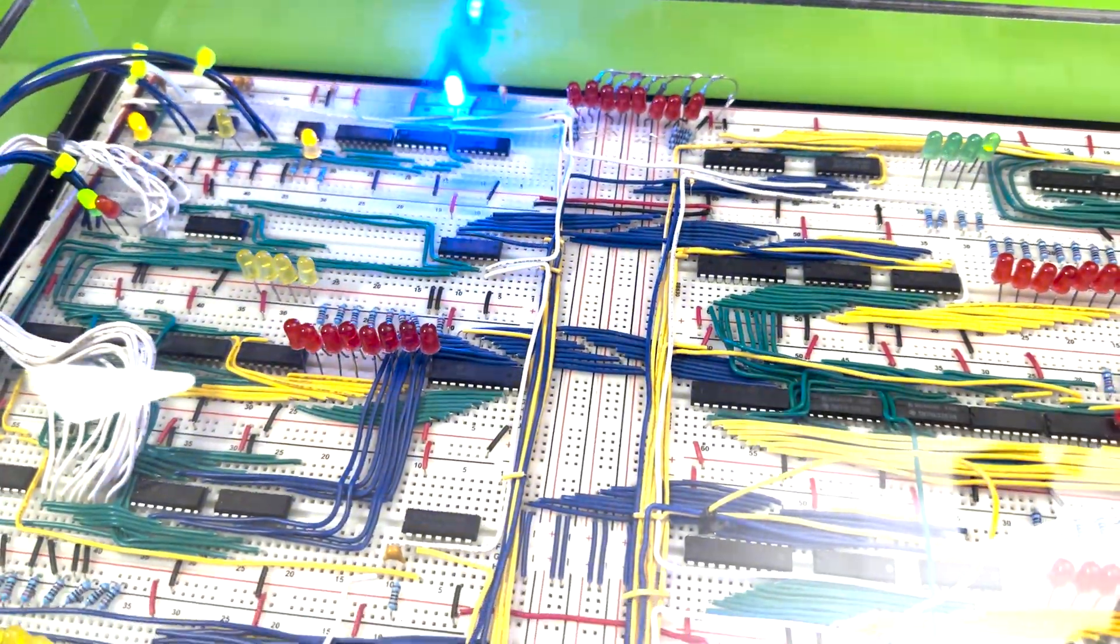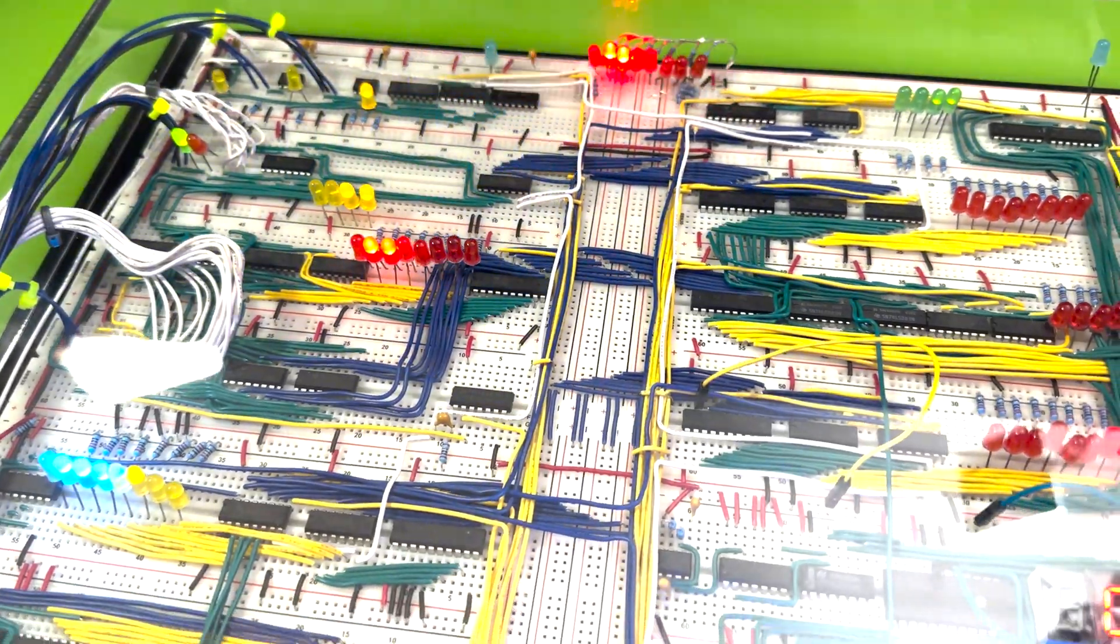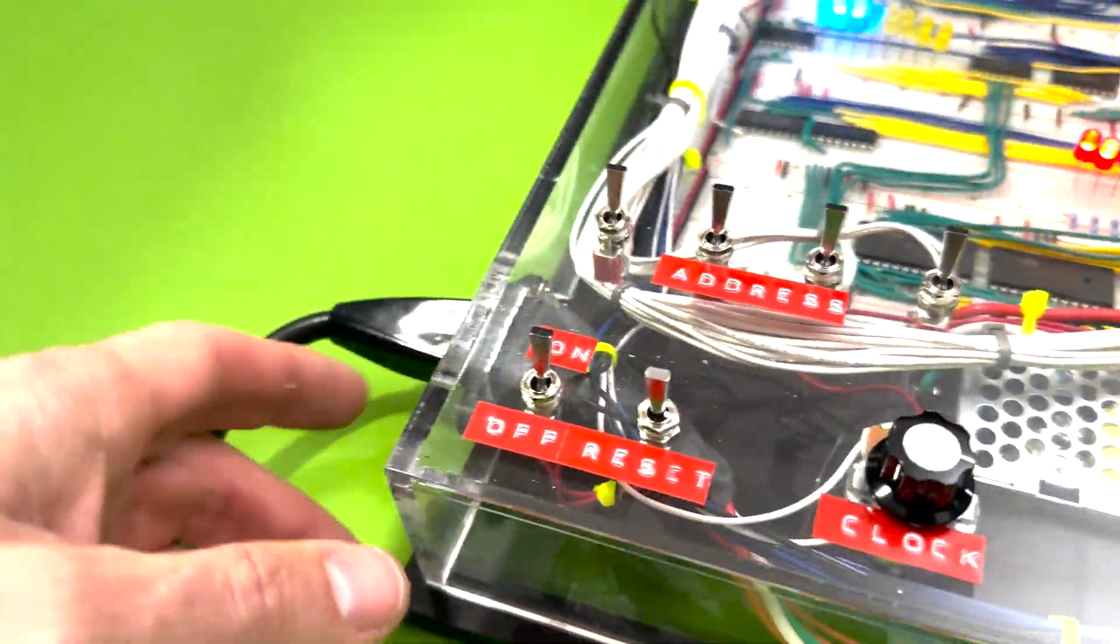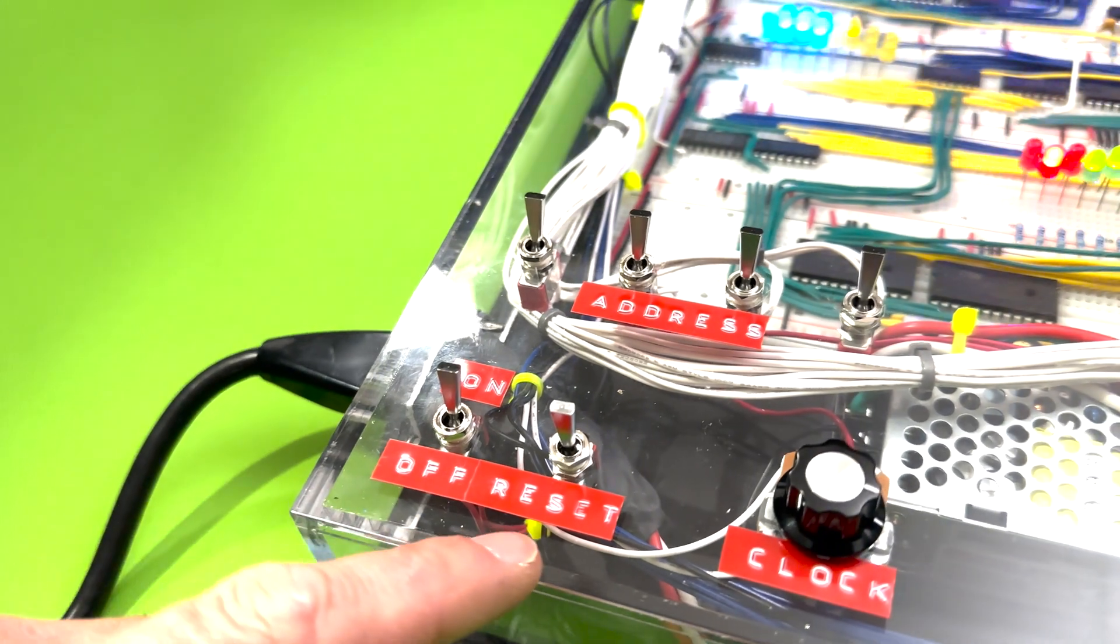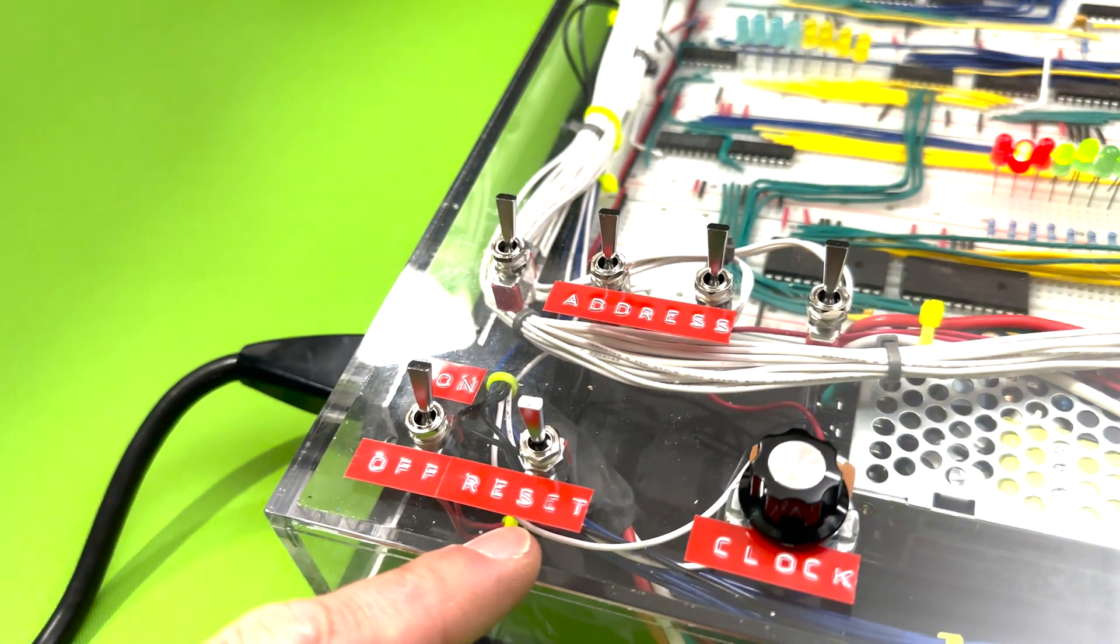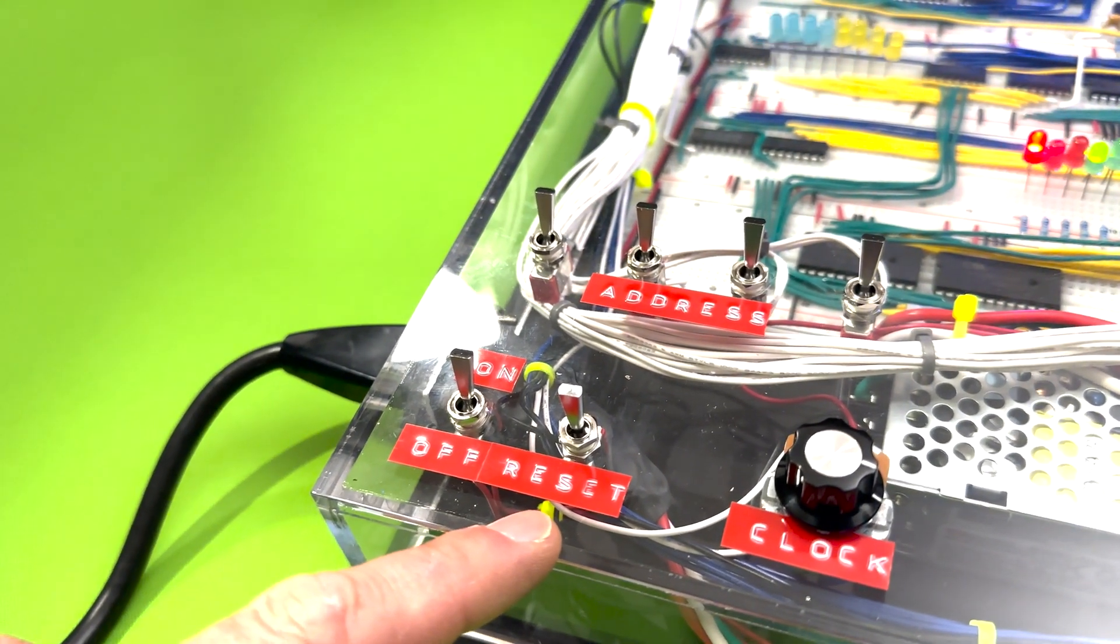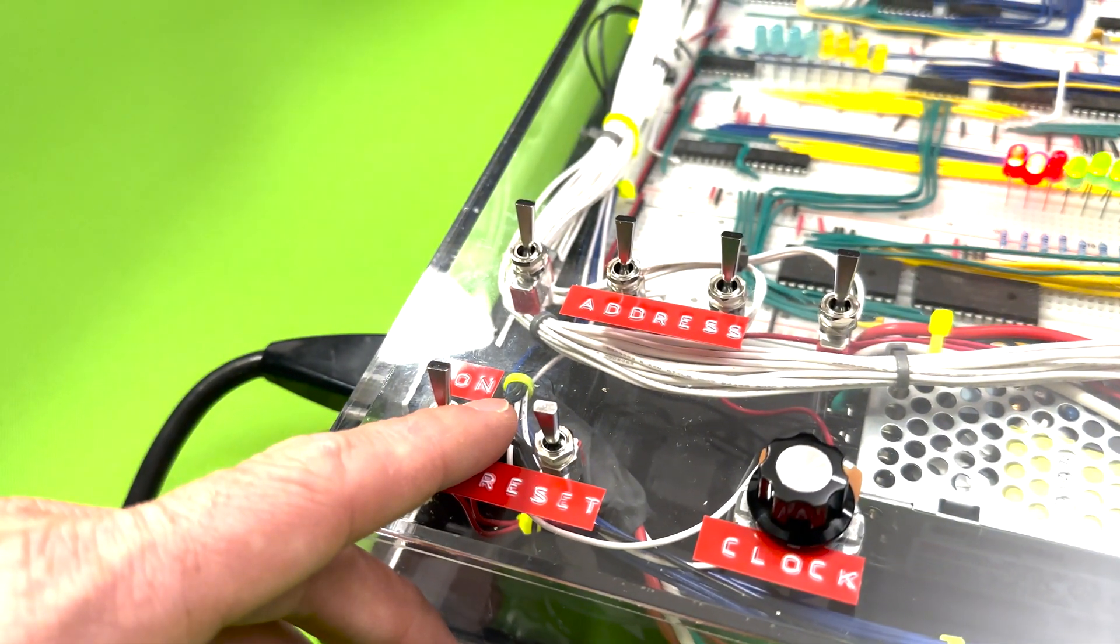Now that we know what each module does, let's take a quick look at the remaining levers. The leftmost lever is the power, and right beside it is the reset switch. When toggled, this switch will reset each module to zero or null.